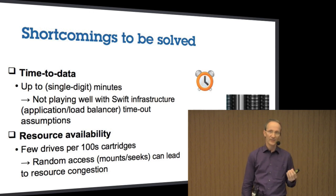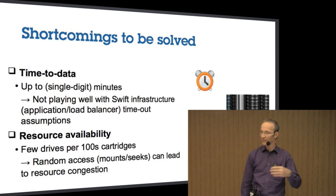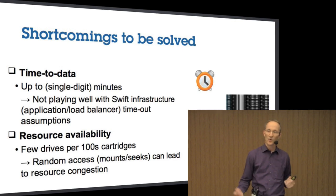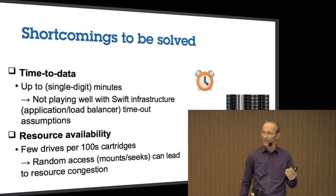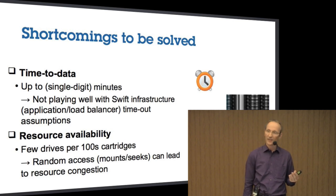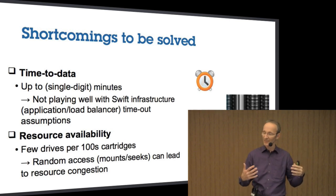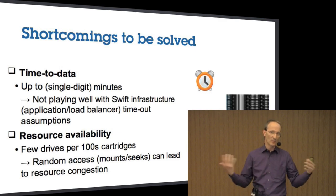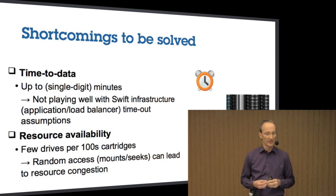One of the issues is obviously the time to data. You see a robot — you have a lot of cartridges, but you have fewer drives for cost reasons, since drives are much more expensive than cartridges. So you need to move around the cartridges to get access to your data, which could take up to minutes in the single-digit minute range. When you have multiple accesses from a lot of clients and many requests in parallel, you need to wait more and more the more requests you get to your Swift cluster.